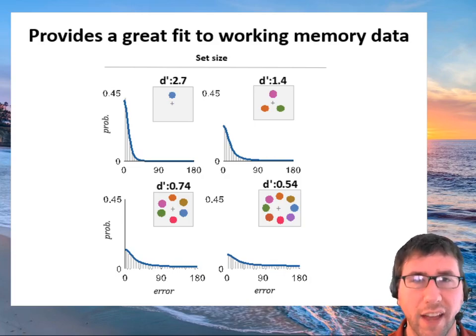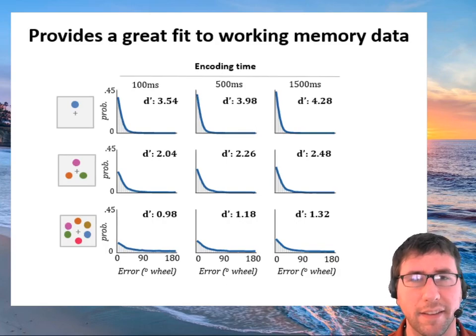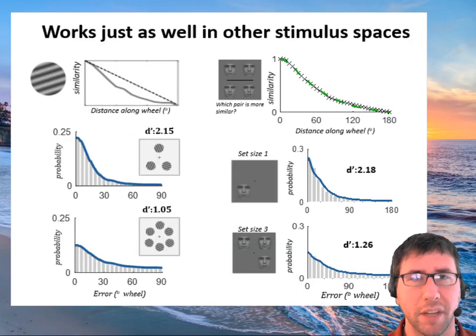So across set size, all you have to do is vary d-prime to perfectly fit the distributions of the data, even better than mixture models fit them, even at the individual subject level. Across changes in delay and set size and encoding time and set size, all of these only seem to vary along this one parameter. Even though many models claim there are many ways memory can vary, always just one knob is all you need to fit the data. So this is strong evidence in favor of a one-parameter model like this. It also works just as well in other stimulus spaces. Here's some sample orientation and face similarity data, and the corresponding fits to memory.